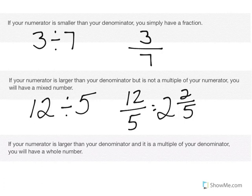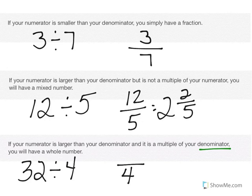If your numerator is larger than your denominator and it is a multiple of your denominator, you will have a whole number. For instance, if I have 32 candy bars and want to divide them evenly amongst 4 people, the number of equal portions needed is 4 — so that's my denominator — and the 32 candy bars is my numerator. Since 32 is larger than 4 and 32 is also a multiple of 4, I know I'm going to have a whole number. 32 divided by 4 gives me 8.